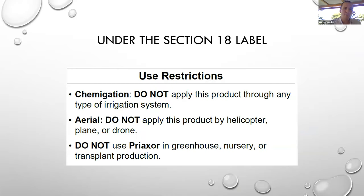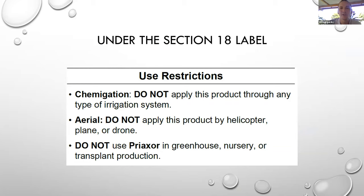Other restrictions: chemigation is not allowed. Aerial application is not allowed, and the product cannot be used in greenhouses, nurseries, or transplant production — only in field-grown coffee. That covers the entire label.